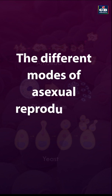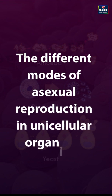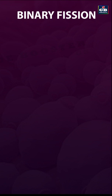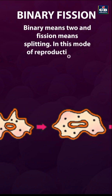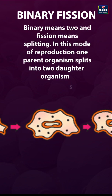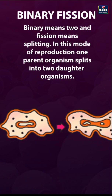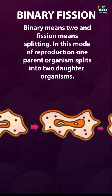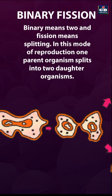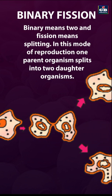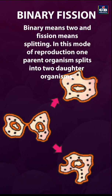The different modes of asexual reproduction in unicellular organisms. Binary fission. Binary means two. Fission means splitting. In this mode of reproduction, one parent organism splits into two daughter organisms.